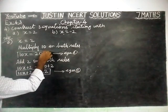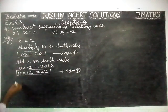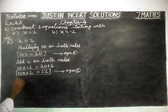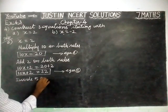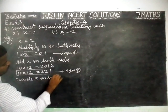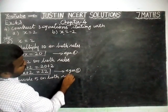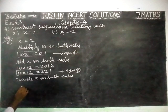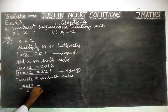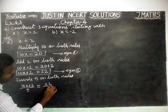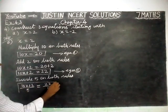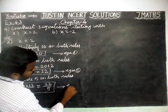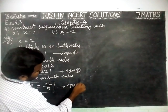Now, we are going to divide 5 on both sides. So, 10x plus 2 divided by 5 is equal to 22 divided by 5. We cannot simplify, but we can write it as an equation. This is equation 3.